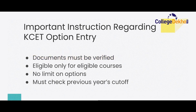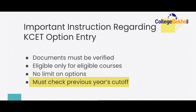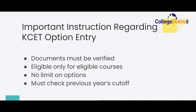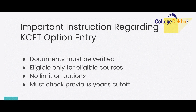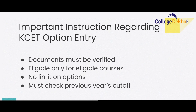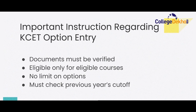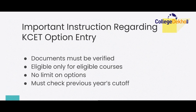Candidates are allowed to fill choices for all the courses that they are eligible for admission. There is no limit on the number of colleges and courses that a candidate can choose, so you are advised to choose as many colleges and courses as you can, as that will increase your chances of admission through seat allotment. Candidates are also advised to check the previous year's closing ranks or cutoffs of colleges before proceeding with option entry, as that will help you understand which options to fill. If you are looking for KSET previous year closing ranks and cutoffs, you can check the video description for the link.